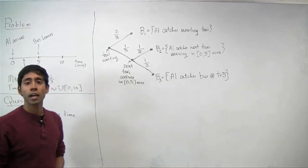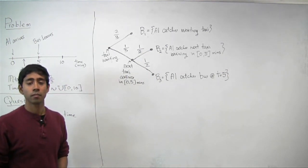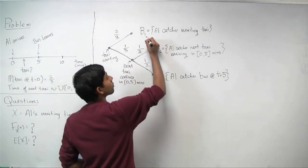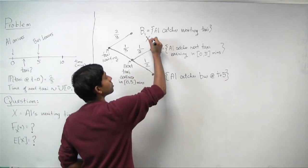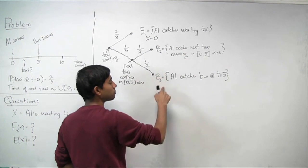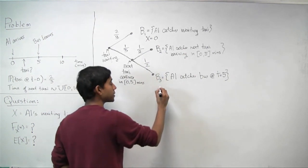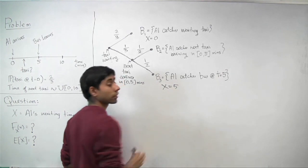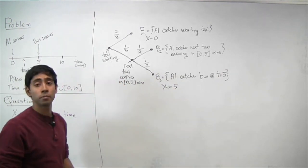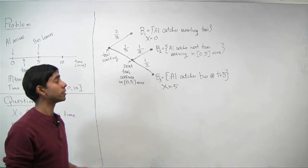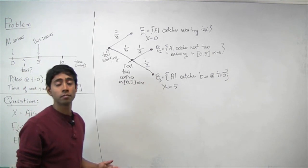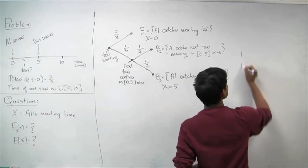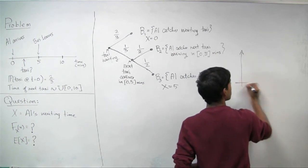Let's look at what X, the waiting time, looks like. If B1 happens, Al isn't waiting at all, so X equals zero. If B3 happens, Al waits exactly five minutes. If B2 happens, X is going to be some value between zero and five. We can actually draw the density for that case.